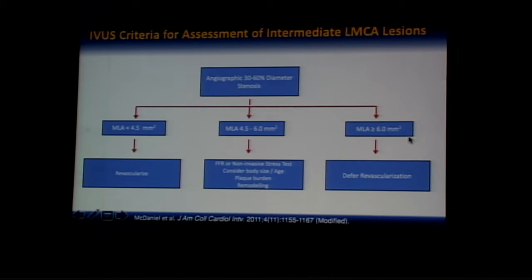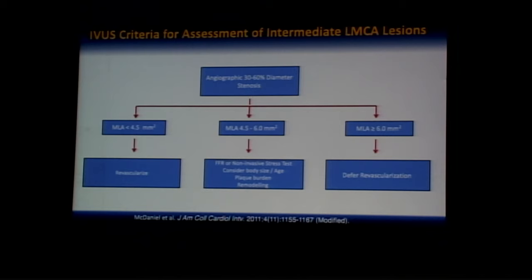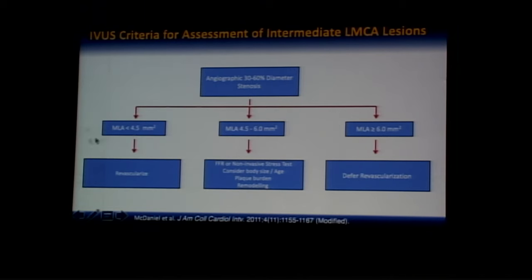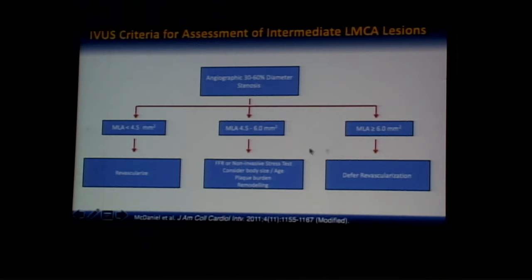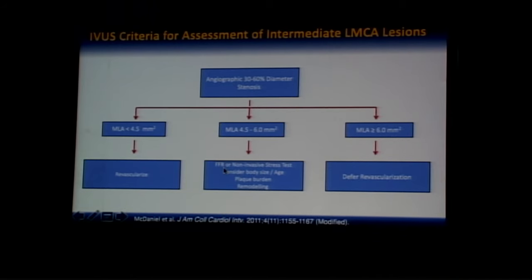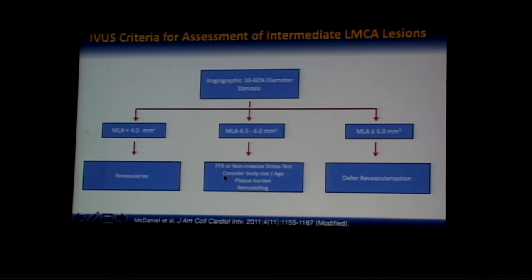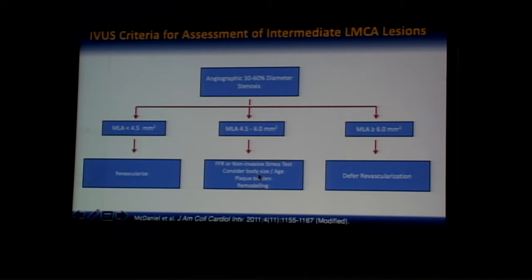Moving to individual lesion subsets, starting with left main disease. IVUS evaluation has good correlation with FFR, so it can be used for assessment of intermediate lesions. When lumen area is less than 4.5 mm², revascularization is indicated; if more than or equal to 6 mm², revascularization can be safely deferred. When it is between 4.5 to 6 mm², if there's no downstream disease, use FFR or a non-invasive stress test. If there is downstream disease, take into account body size, age, plaque burden, and remodeling for decision-making.